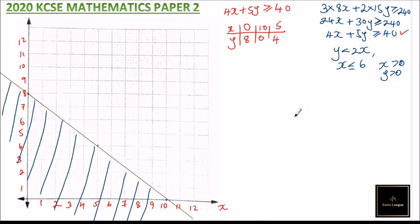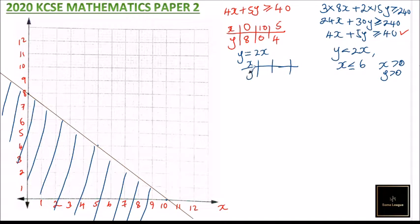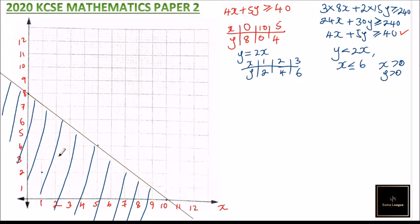Next, we look at the second inequality, Y < 2X. We use Y = 2X to draw the boundary line. Making a table: when X = 1, Y = 2; when X = 2, Y = 4; when X = 3, Y = 6. We plot these points and draw the line through them.